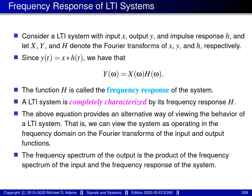I'd like to consider the relationship between linear time invariant systems and the Fourier transform. Suppose that we have an LTI system with input little x, output little y, and impulse response little h. Let big X, big Y, and big H denote the Fourier transforms of little x, little y, and little h, respectively.